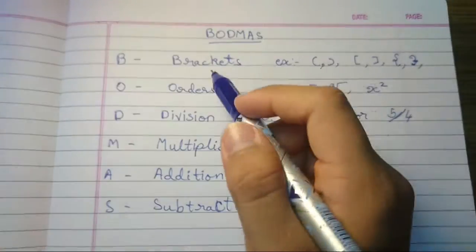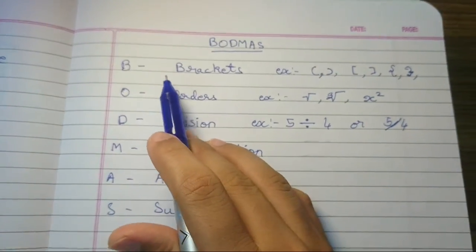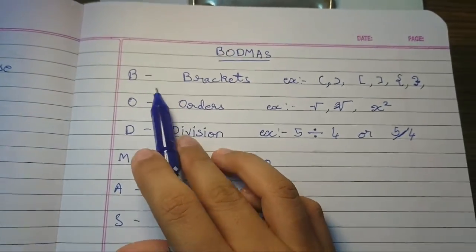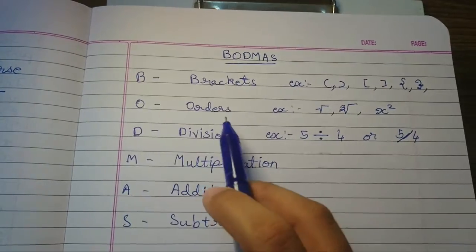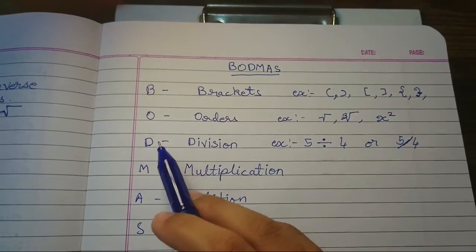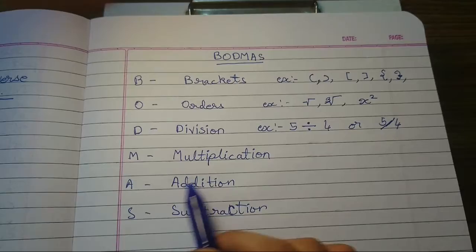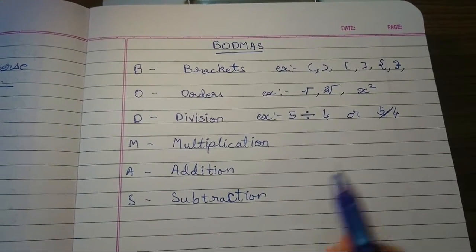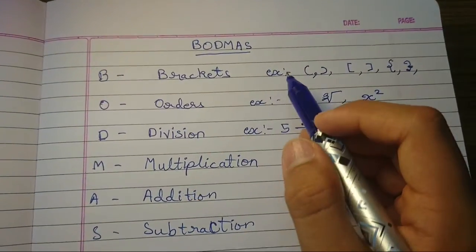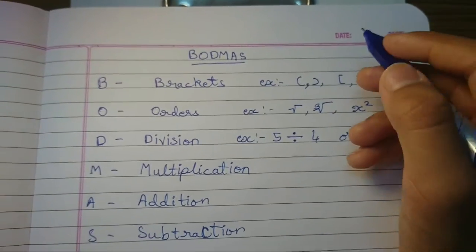I will give you some more information about it. So let's get started. As I told you before, B is Bracket, O is Order or Off, D is Division, M is Multiplication, A is Addition, and S is Subtraction. So for brackets, for example, they also say it as parenthesis. In America they say it is parenthesis.